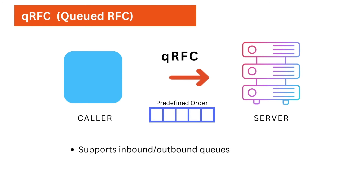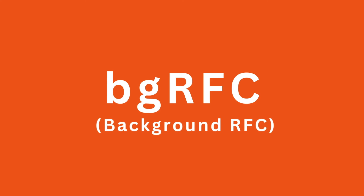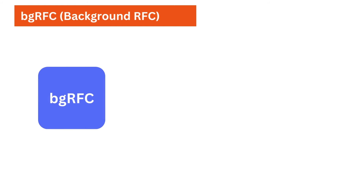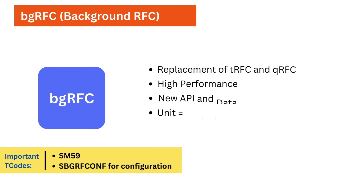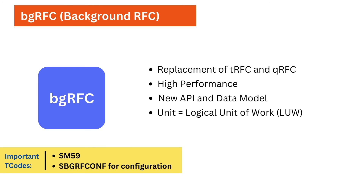The next variant is BGRFC, which stands for Background RFC. BGRFC is the successor of TRFC and QRFC, with significant improvements in terms of performance and functionality.